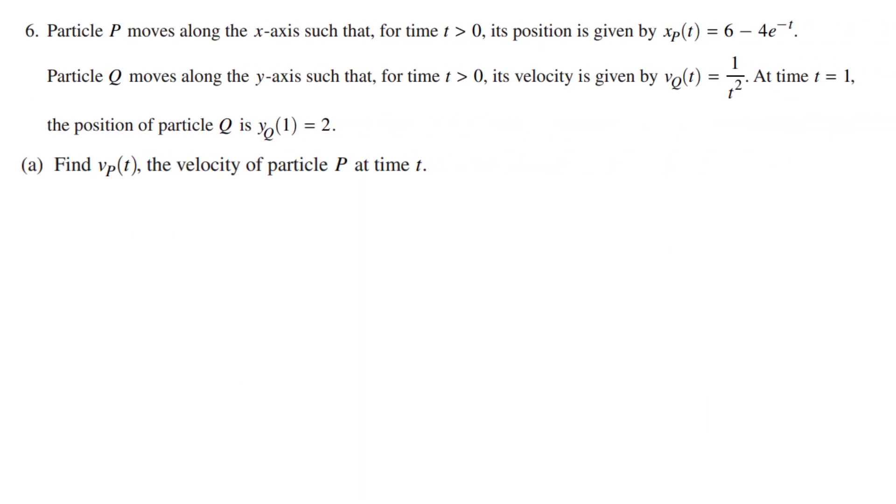Particle P moves along the x-axis such that for time t greater than 0, its position is given by xp equals 6 minus 4e to the power of negative t. Particle Q moves along the y-axis such that for time t greater than 0, its velocity is given by vq equals 1 over t squared. At time t equals 1, the position of particle Q is yq of 1 equals 2.